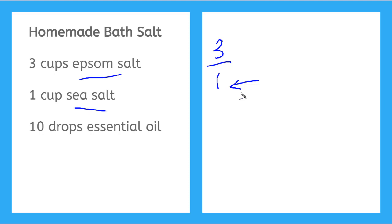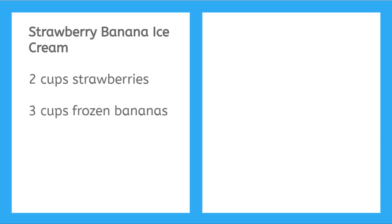Now let's try a harder example. Here we have a recipe for strawberry banana ice cream. It says two cups of strawberries to three cups of frozen bananas blended together. What is the ratio of strawberries to bananas? Two to three.